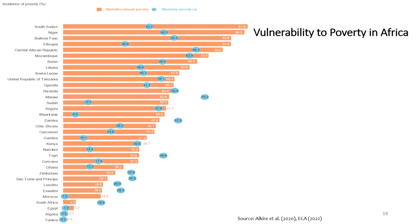The Economic Commission for Africa looks at vulnerability to poverty in Africa, examining both multi-dimensional poverty and monetary poverty across different African countries. Their diagram shows that South Sudan, Niger, and Burkina Faso have the highest rates of multi-dimensional poverty. There is a difference between multi-dimensional poverty and monetary poverty — multi-dimensional poverty goes well beyond income and includes other dimensions like education, living standards, and health, which are very important when looking at poverty across developing countries and Africa in particular.